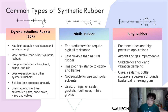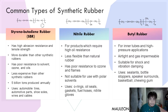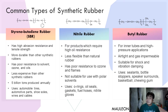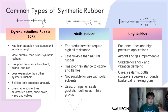Next is butyl rubber, commonly used for inner tubes and high-pressure applications. It is airtight and gas impermeable, making it useful where fluids and gases are involved. It is also suitable for shock and vibration damping, and is commonly used in sealants, bottle stoppers, speaker surrounds, basketballs, and chewing gum.